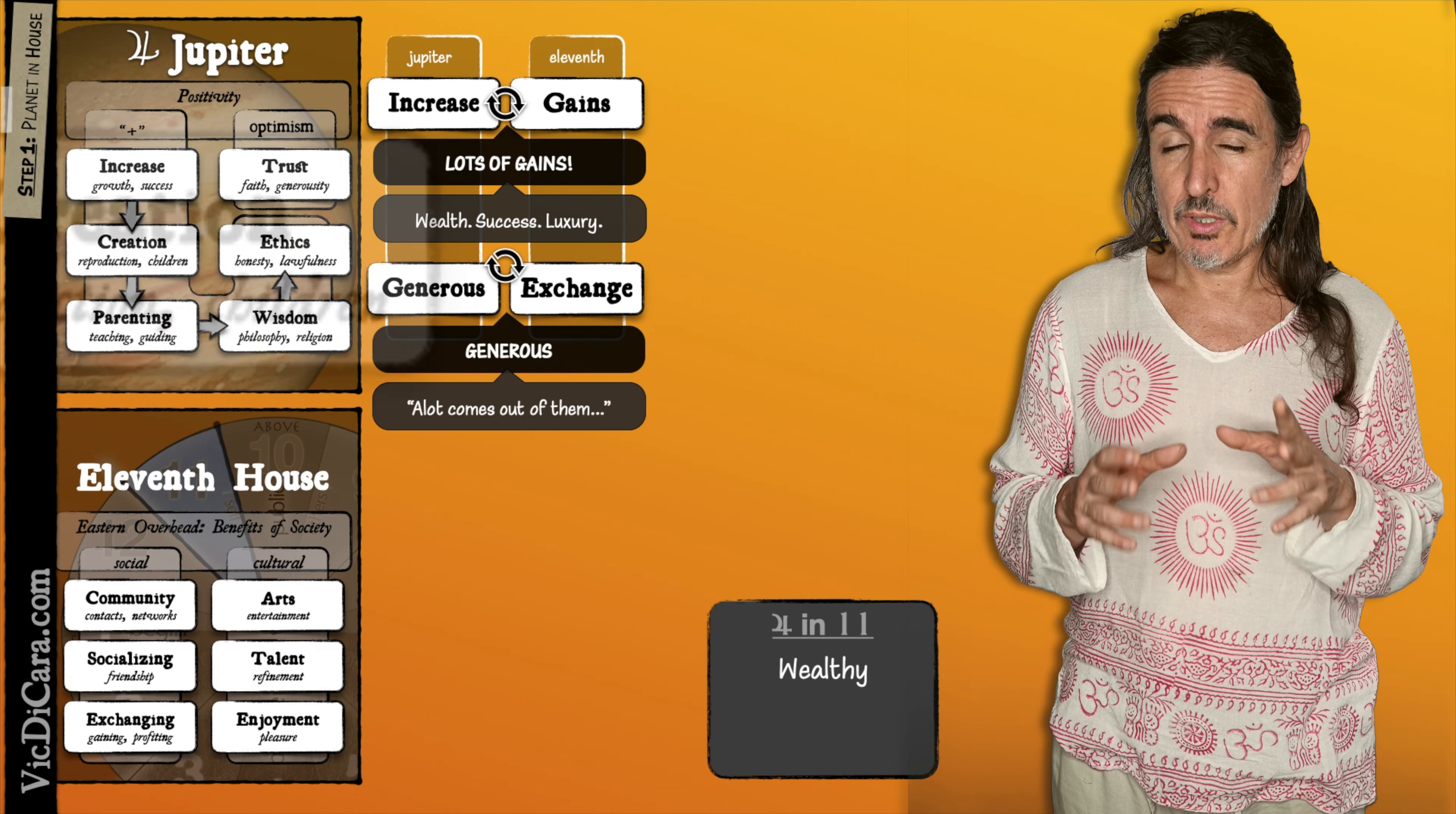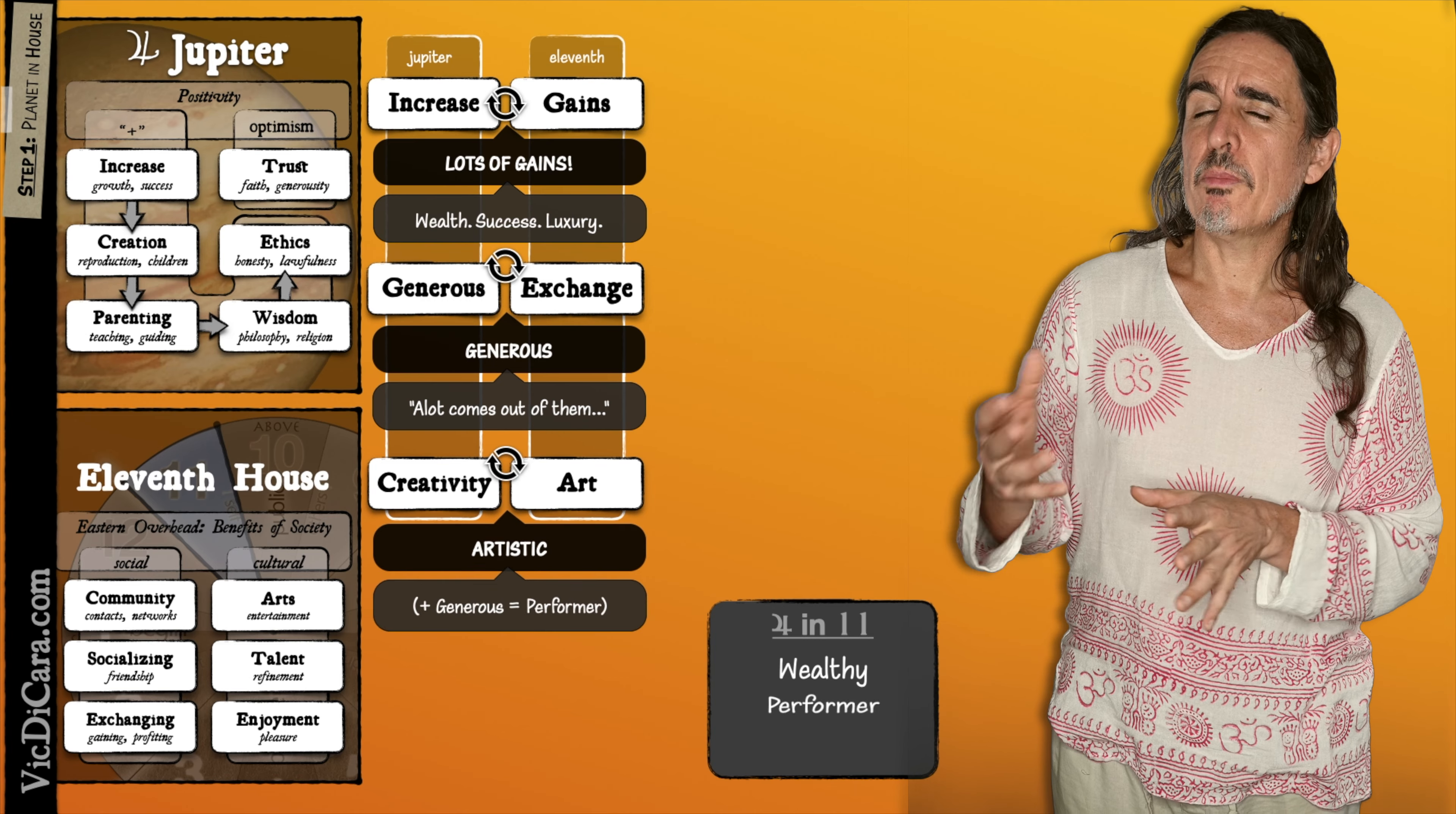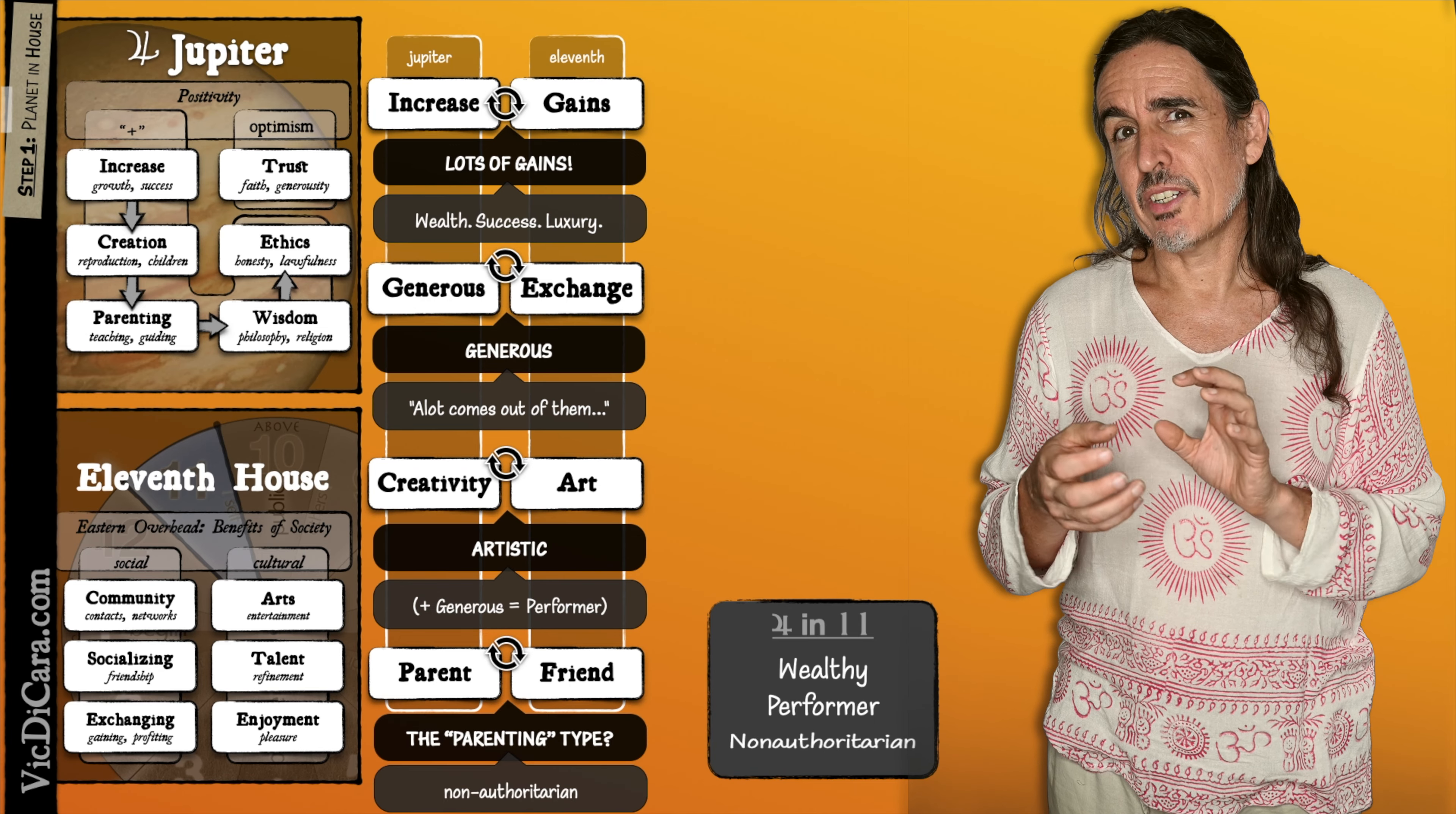For now, we can summarize that Jupiter in the 11th signifies wealth, performance tendency, and non-authoritarianism.